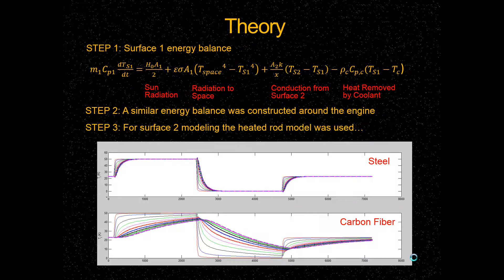In order to get our transfer functions and model this system, we used a series of energy balances. The first one is shown here. This is the energy balance around surface one, which is the cylindrical surface around the spaceship. We have a couple of terms. The first one is the accumulation term. This accounts for the change in temperature.